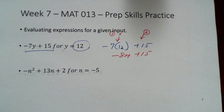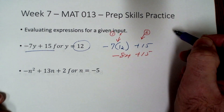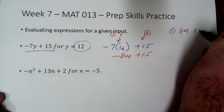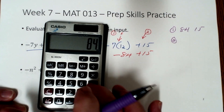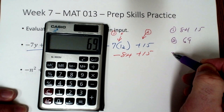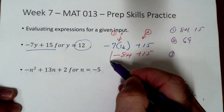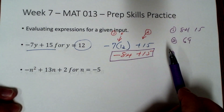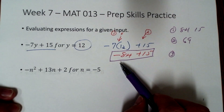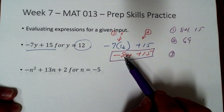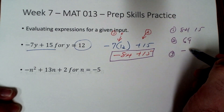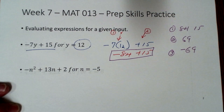Now we're adding numbers with different signs. There are three steps: step one, ignore the signs; step two, subtract the smaller number from the larger — so 84 minus 15 gives us 69. Step three: is the answer positive or negative? We go back to the original numbers and ask which is further from zero on a number line. The 84 is further, and its sign is negative. So the answer is negative 69. Evaluating this expression for y equals 12 gives us negative 69.